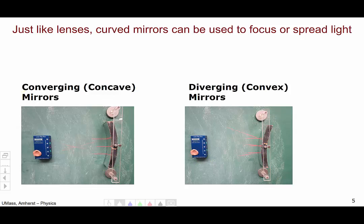Now, concave mirrors are also known as converging mirrors, and convex mirrors are also known as diverging mirrors. To see why, let's look at the light rays as they come out of these blue boxes and interact with the mirrors.